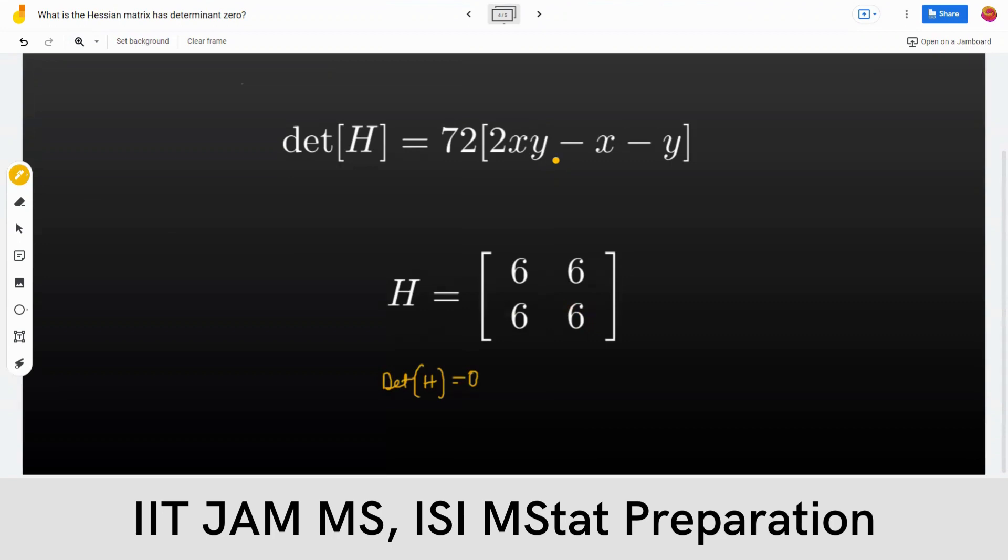You can put x and y to be zero here to get it. The question is, how will you find out what type of critical point it is, because the critical point is of the nature where f of x and both the partial derivatives are zero.